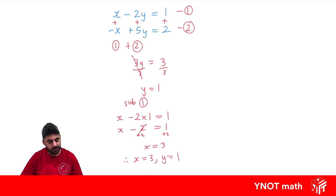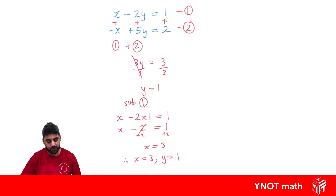And again, if you graphed these two equations, they'd both be straight lines and they would intersect at the point (3, 1).